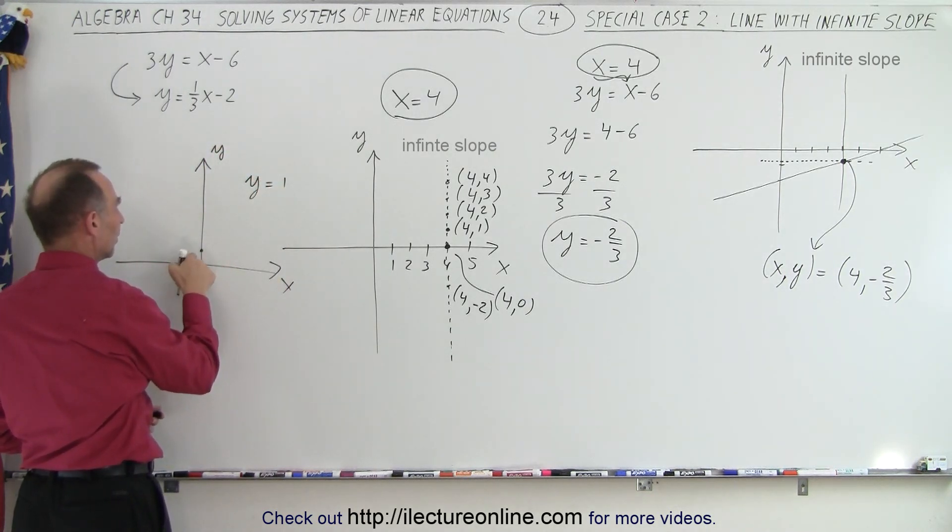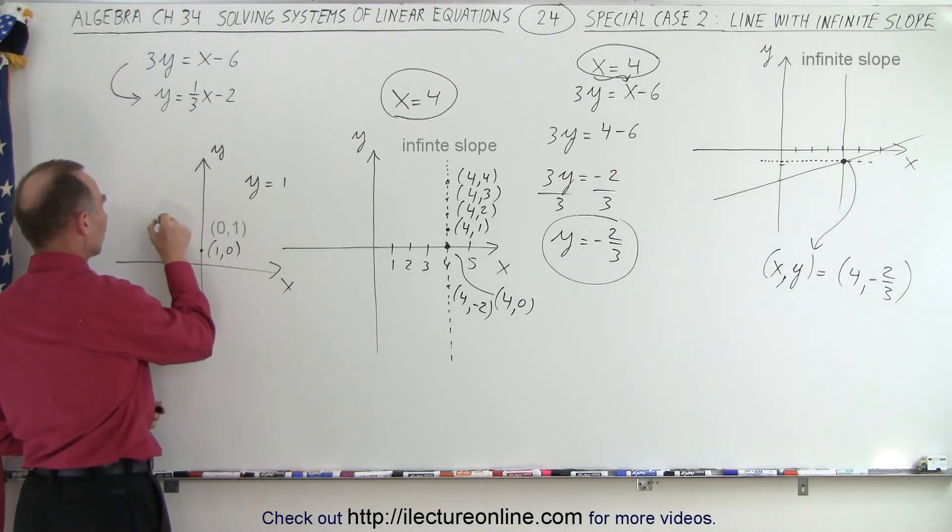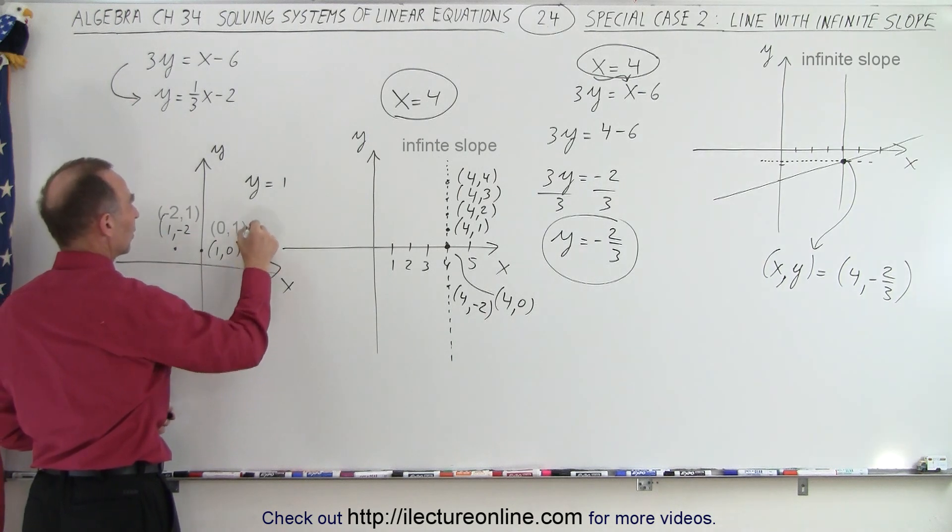So that would be this point right here. The point would be 1 comma 0. But you can have a point over here, which is 1 negative 2. You can have a point over here, which is 1, 3. Notice, again, it creates a line where every point on that line has... Whoa, wait a minute.